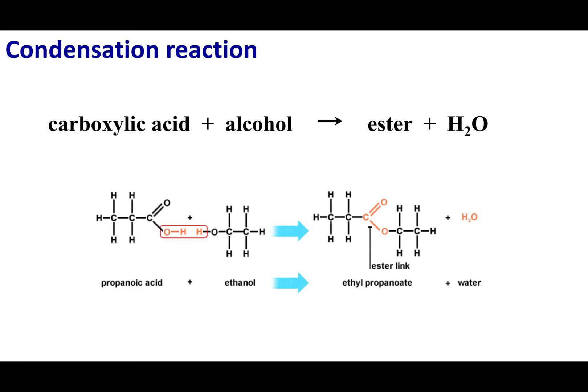Before we get into naming esters, we need to talk about the synthesis of esters. One way to make an ester is through a condensation reaction. Condensation reactions are reactions where you take reactants, combine them, and extrude a small molecule, while combining parts of the reactants into one major molecule. To make an ester, you take a carboxylic acid and an alcohol and condense them together. The small molecule extruded is water, and the remainder combines into one big molecule.